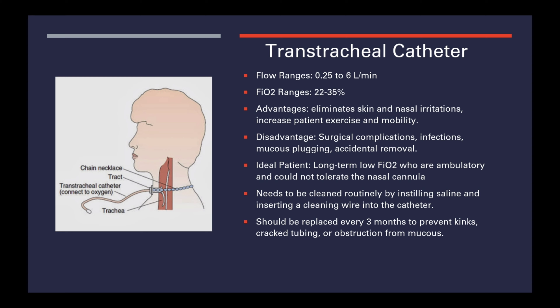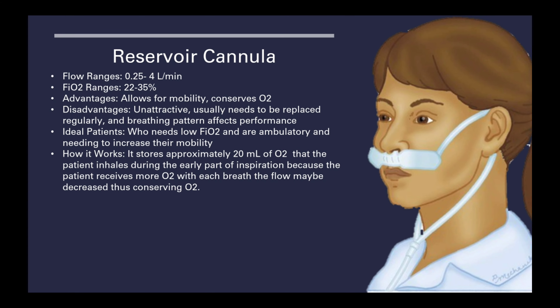Next is the reservoir cannula. Flow ranges are a quarter of a liter per minute to four liters per minute. FiO2 ranges are 22 to 35 percent. Advantages: allows for mobility and conserves oxygen. Disadvantages: it's unattractive to the patient, needs to be replaced regularly, and breathing pattern affects performance. The ideal patient needs low FiO2 and is ambulatory. It stores approximately 20 milliliters of oxygen inhaled during the early part of inspiration, allowing flow to be decreased, conserving oxygen.